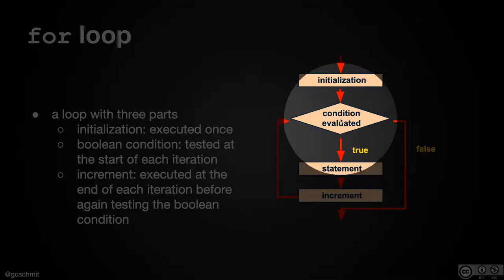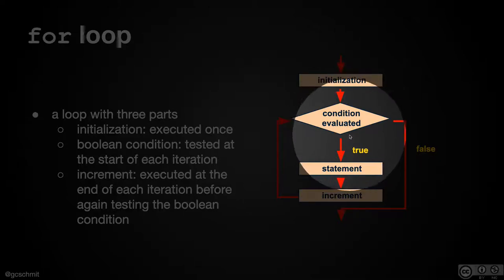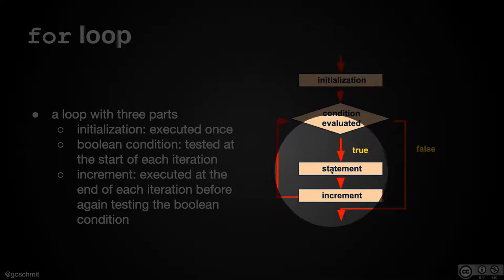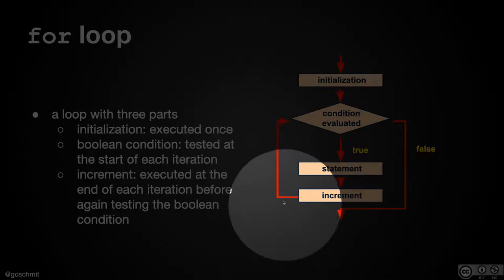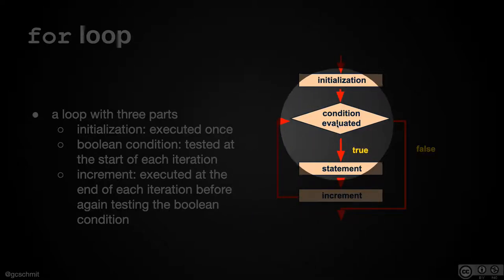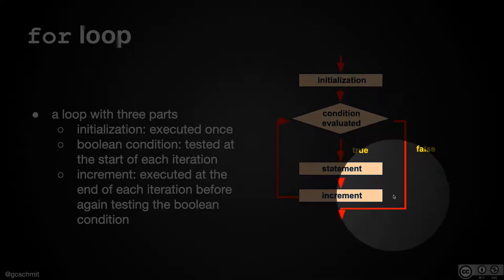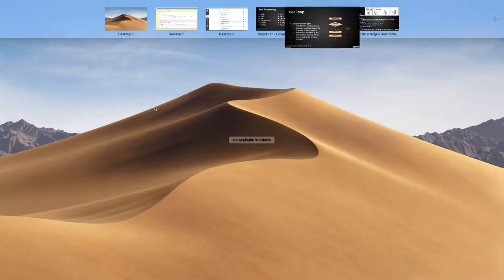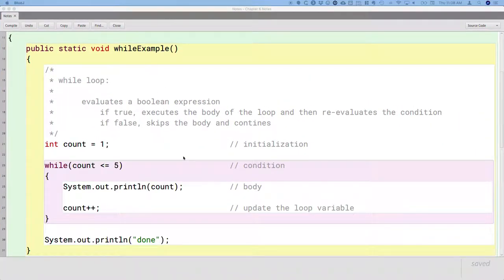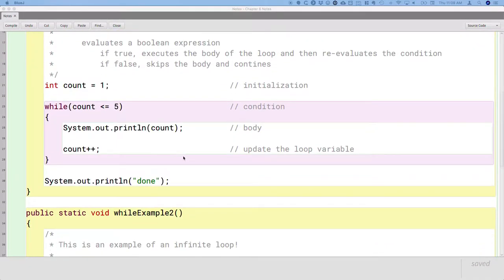As we step through in the debugger, we're going to see that the flow of execution is kind of odd. If the condition is still true, we run the body of the for loop again, then update the loop variable, then check the condition again. Eventually that condition evaluates to false and we're done. It's just going to take a little bit of time to get used to the syntax and the flow of execution for a for statement.